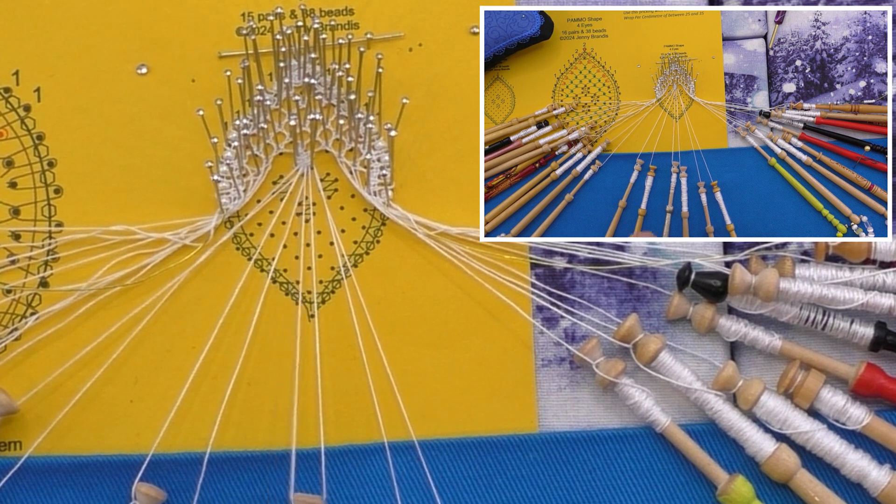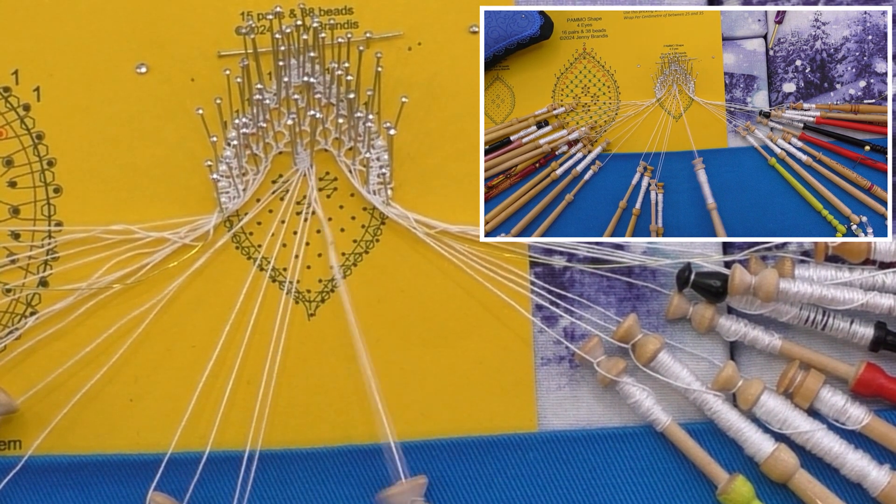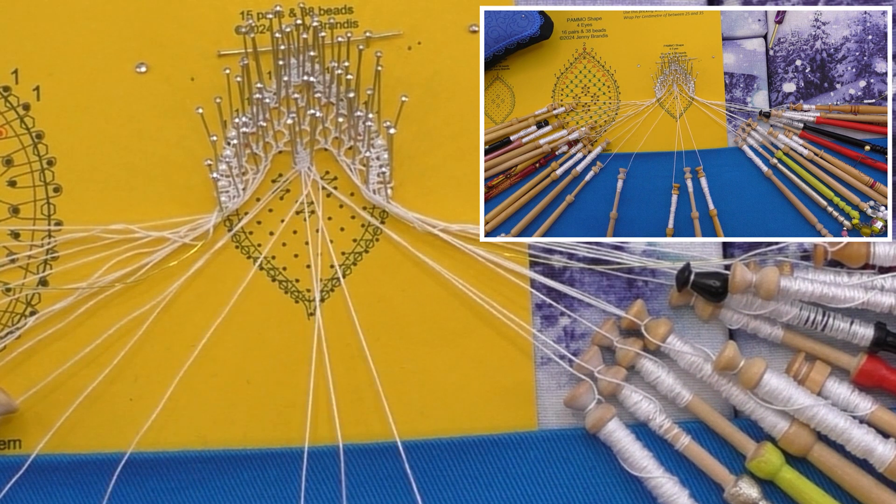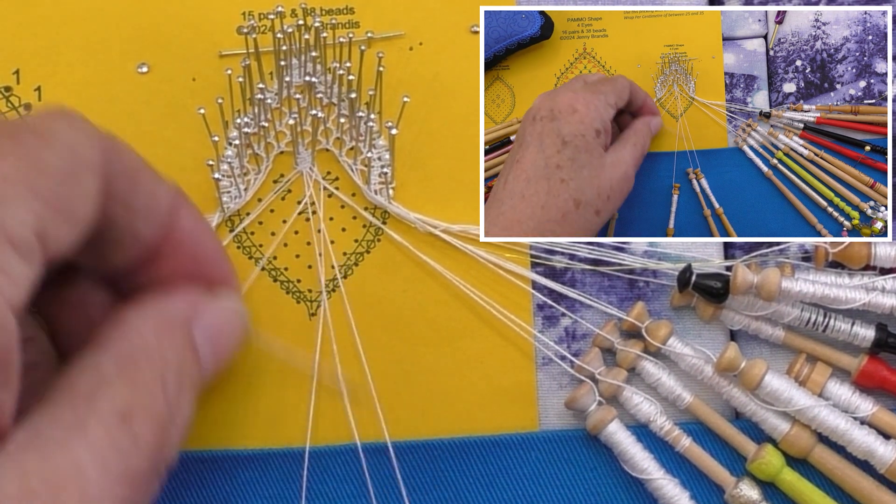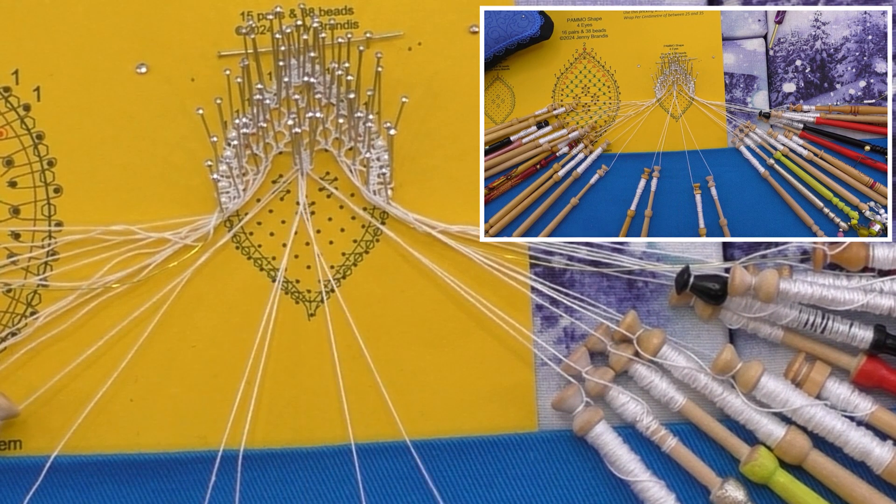Cloth stitch through the outgoing pair, add three twists to it and lay that pair aside. Work the last pin in cloth stitch, pin, cloth stitch. Add three twists to both pairs, tension and lay aside.